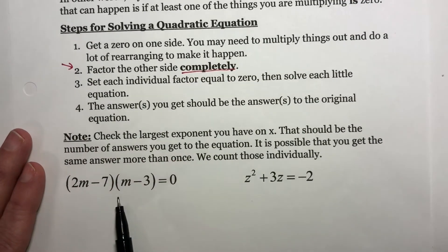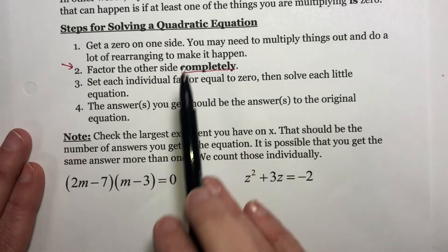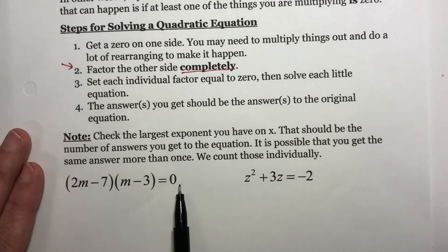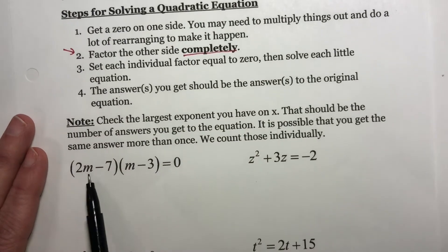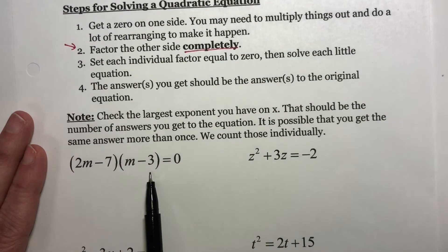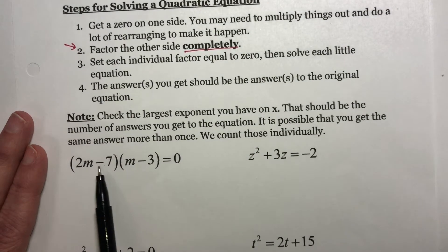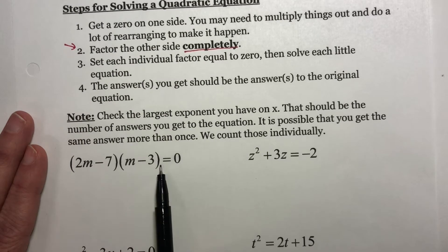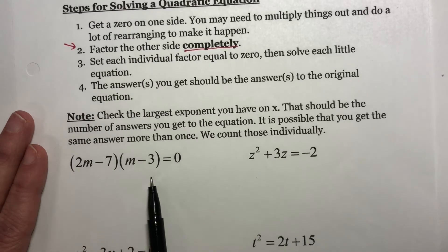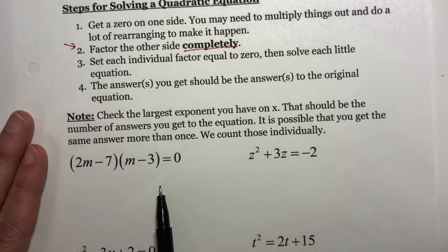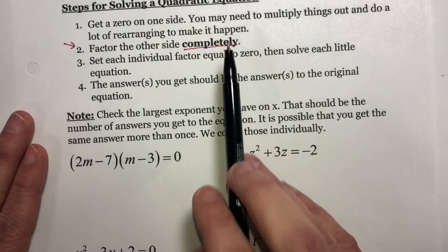So, let's look at this first problem. Get 0 on a side—they've already done that for us. Factor each side completely—they've done a factoring for us. Let's check to make sure it's done completely. Do I have a GCF here? No. Do I have a GCF here? No. These are both first powers on our m's, so this is as factored as possible. So, they've done steps 1 and 2 for us.